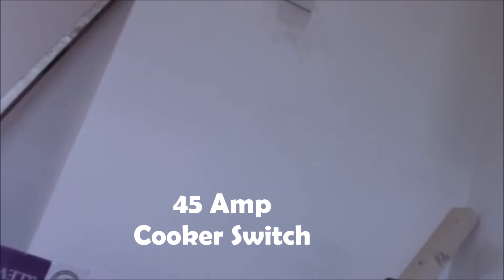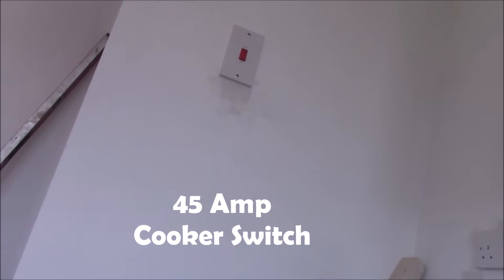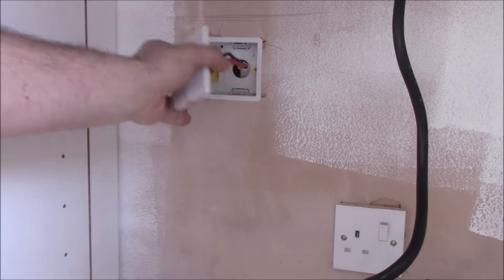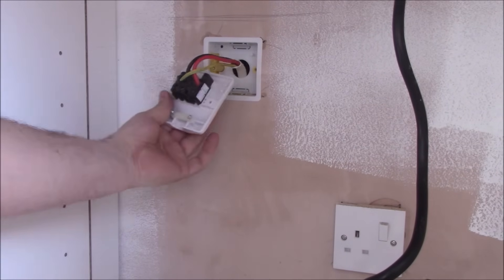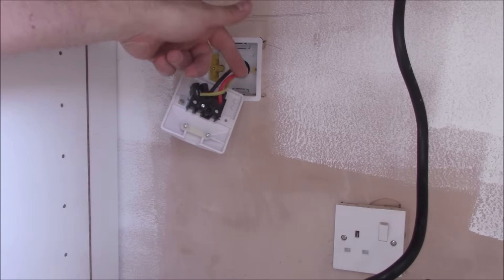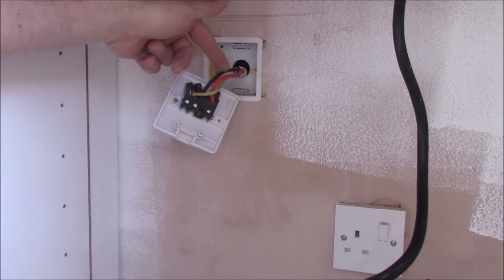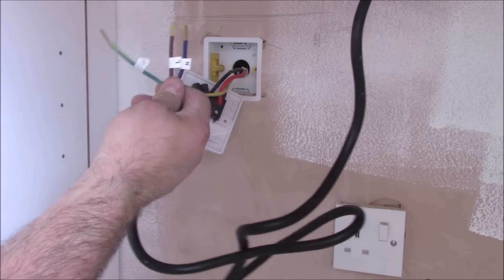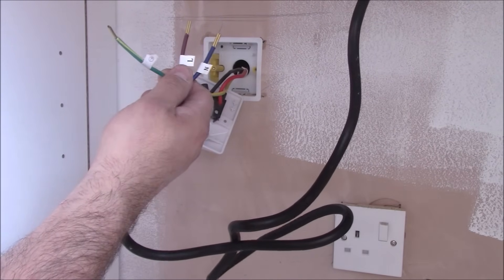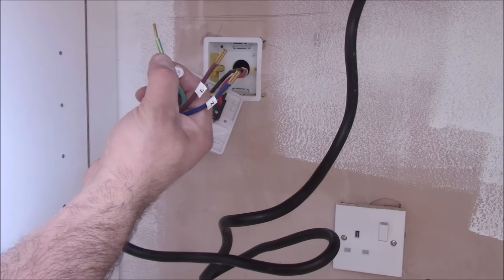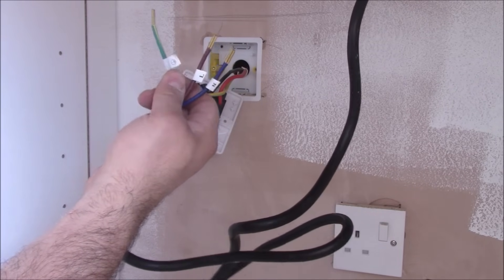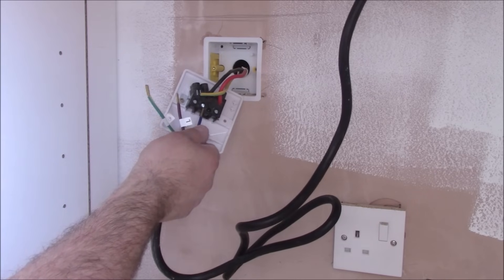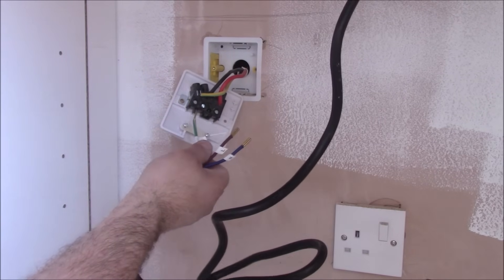You need this connection unit under the hob. As you see, this is old colors. Red is live, black is neutral and this is the earth wire. This is the new wires. So blue neutral, brown live and this red and green. And then this green and yellow, the earth wire. So you connect the blue along with the black, the brown along with the red and earth to earth.